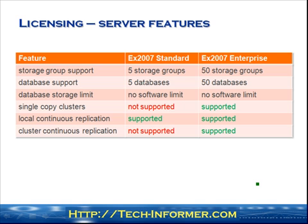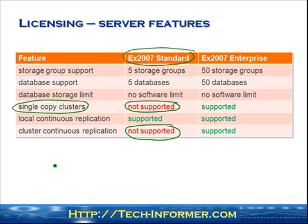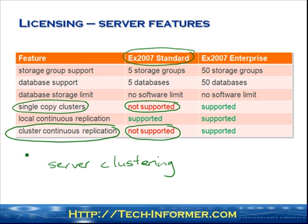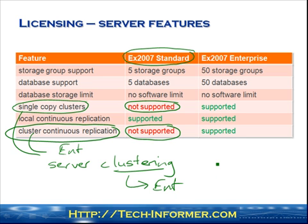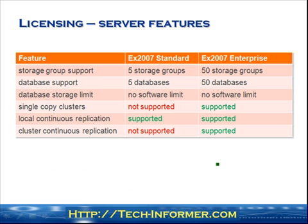Now let's touch on licensing. On the Exchange Standard Edition license, there is no support for single copy clusters — in other words, server clustering. That's not supported with the Standard Edition, just like Exchange 2003. Clustered Continuous Replication is also not supported on the Standard Edition; it's only supported on the Enterprise Edition. Both of these use clustering technology, so you need the Enterprise Edition license. Clustered Continuous Replication doesn't exist in 2003, but it is a form of clustering.